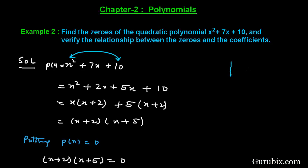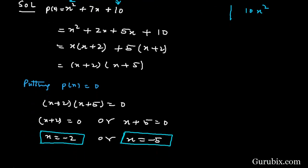The product of the first term and last term is 10x². We factorize the middle term into 2x and 5x — this means 2x + 5x = 7x and 2x × 5x = 10x². So our splitting of the middle term is correct. Now we shall take x common from the first two terms.